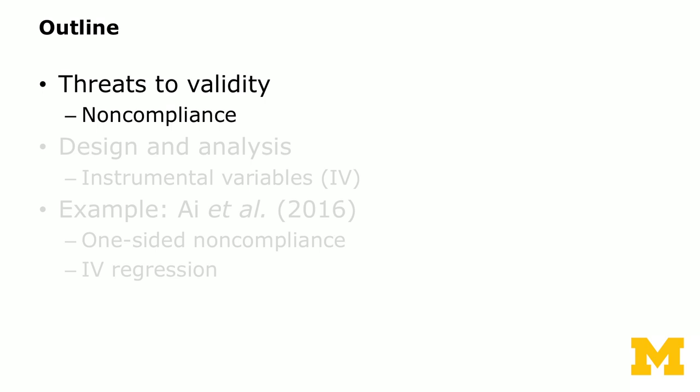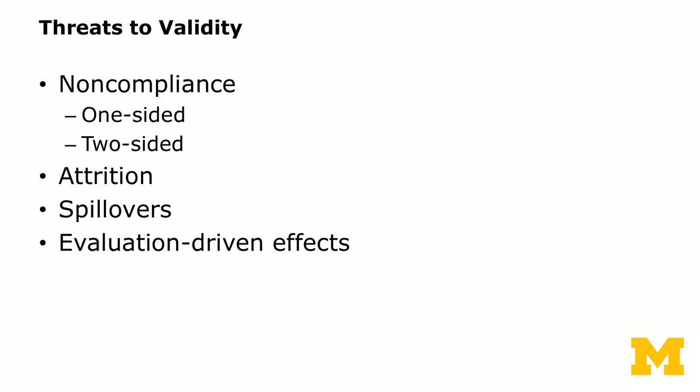Let's go through the first topic: threats to validity. All sorts of things can go wrong when you run an experiment. For noncompliance, we differentiate between one-sided versus two-sided noncompliance. We might also have attrition, spillovers, or evaluation-driven effects. Hopefully when you design and analyze experiments, you'll remember these threats to validity.